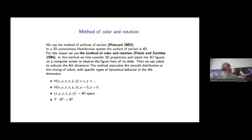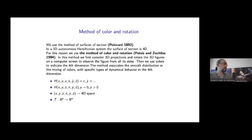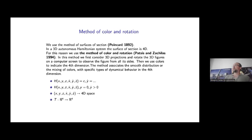In order to study the phase space in the neighborhood of an unstable periodic orbit, we use the method of color rotation. In our 3D autonomous Hamiltonian system, the phase space is six-dimensional. Because of the energy constraint, the phase space is embedded in a five-dimensional manifold. Using Poincaré sections with a surface such as y equals zero, we obtain a four-dimensional space of section — solving the Hamiltonian for y-dot to reduce by one dimension.